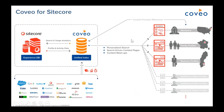Coveo is also able to log to our usage analytics database stored in the cloud information about user search and click behavior, and potentially custom events. It's very interesting to understand what people are searching for on your site, whether they're finding what they're looking for, what they do after they search, and whether they click on anything. All that information is stored in Coveo's usage analytics database, with dashboards and reports to help you learn from user behavior, plus machine learning algorithms to automatically tune results returned to the user.